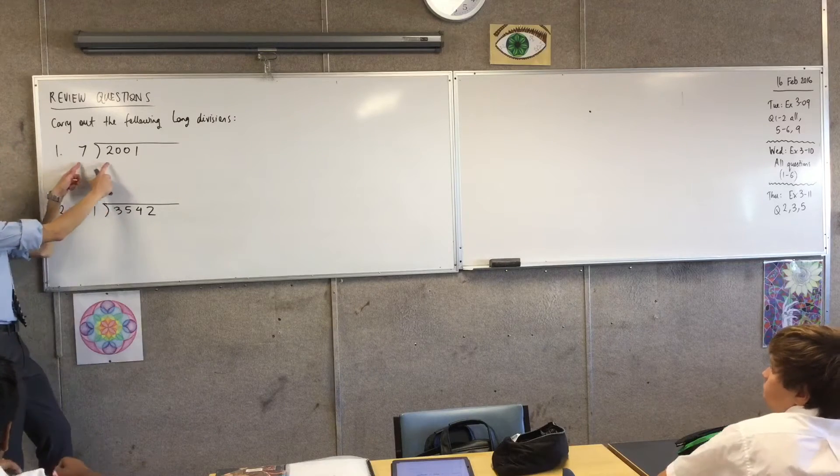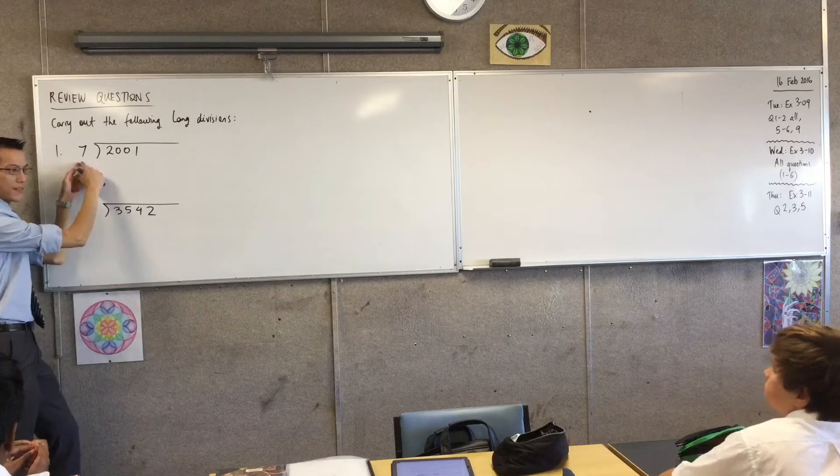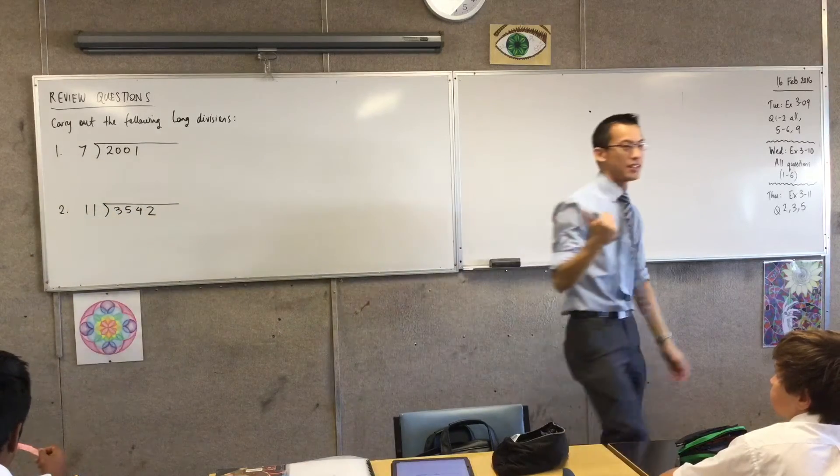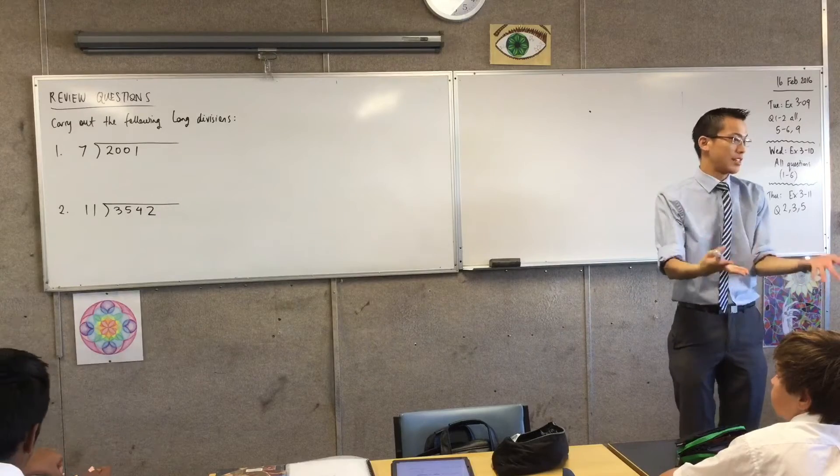The first thing I'm going to do is I'm going to say, look, I've got 2001 and I've got 7. 2001 is my dividend. That's the thing I'm sharing out to lots of people. And 7 is the divisor. That's how many groups I need to split it up into.